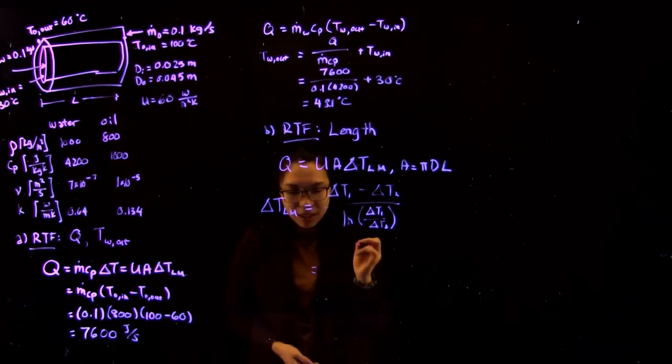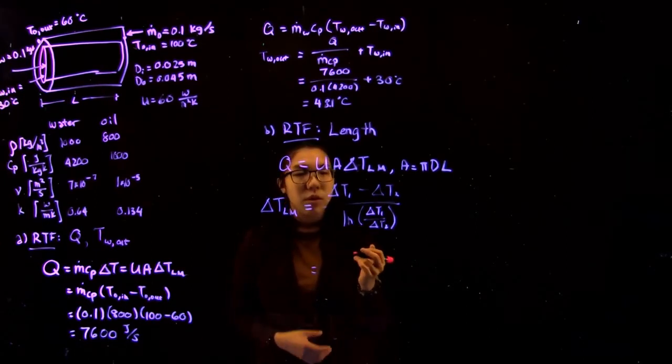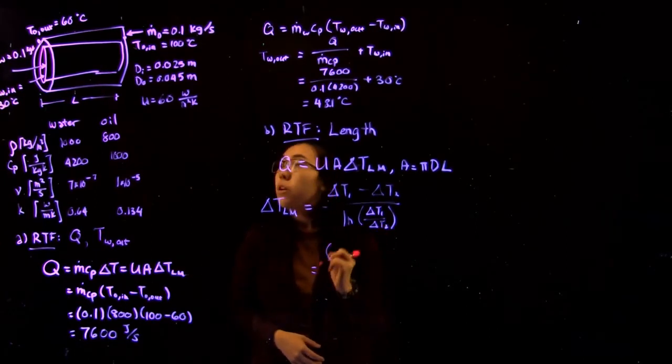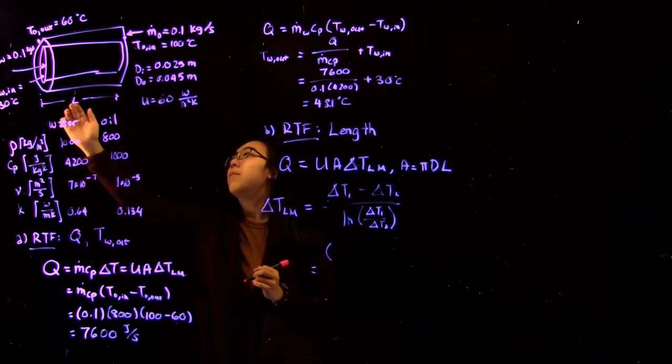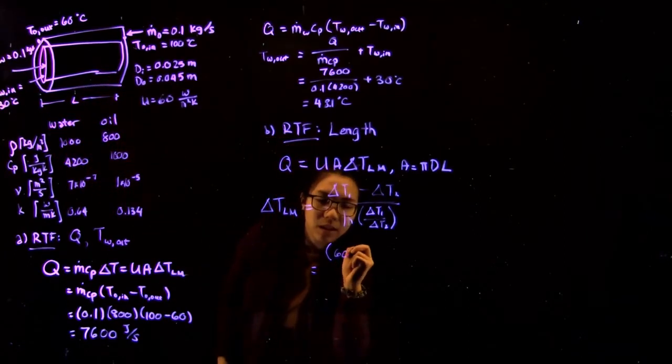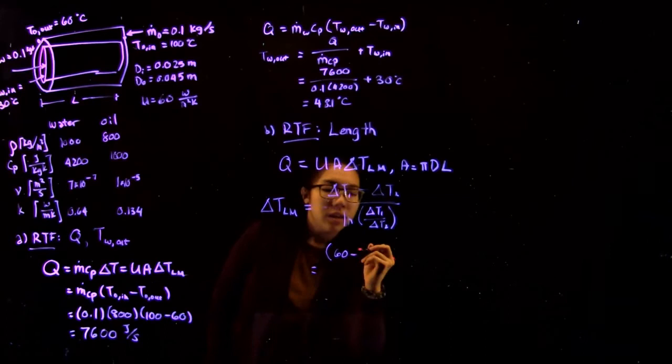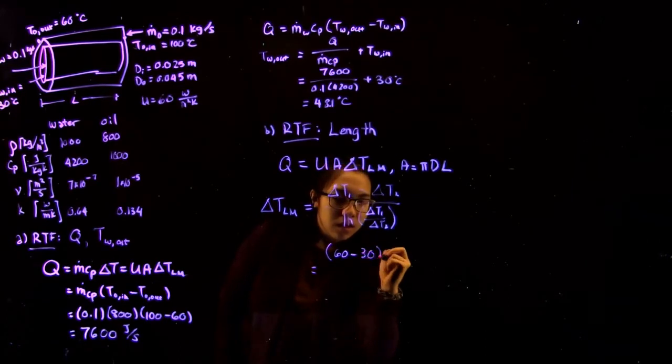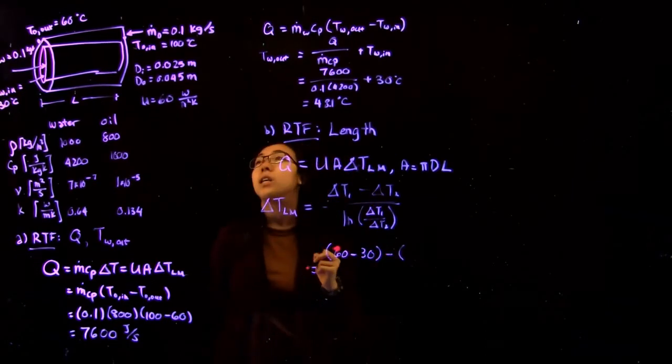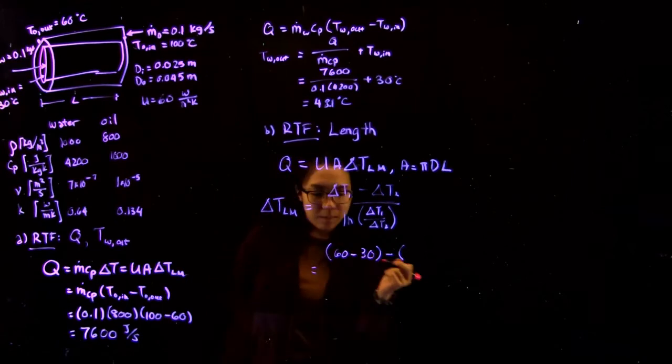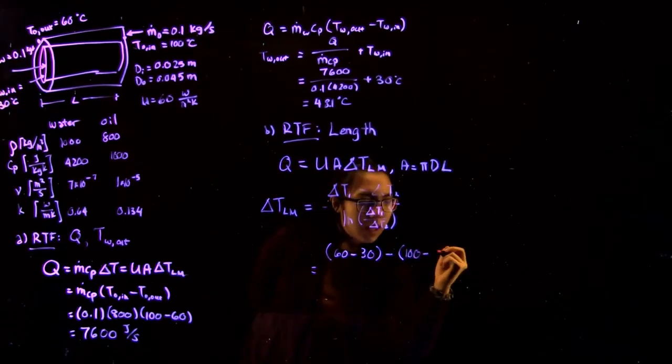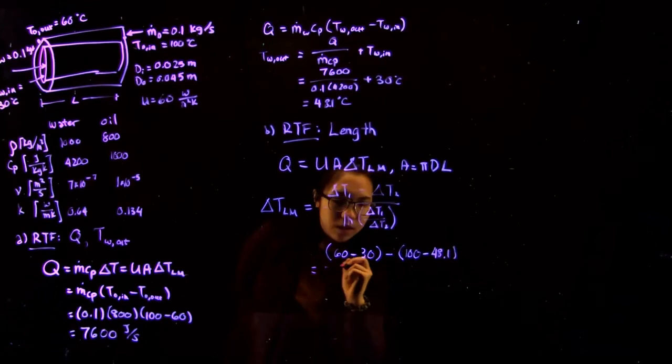So here, looking at our values, we want to know the difference in temperature at each of the ends. So on the first side, we have the oil out being 60 degrees minus water in is 30. On side 2 of the exchanger, you have oil in being 100 and water out being 48.1.